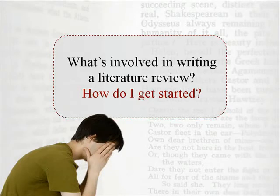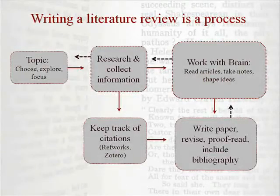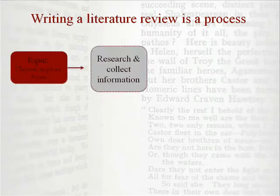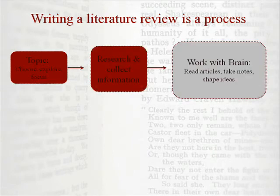At this point, you may be asking yourself what's involved in writing a literature review and how do I get started? Writing a literature review is a process with several key steps. Your first step involves choosing, exploring, and focusing your topic. At this stage, you might discover that you need to tweak your topic or the scope of your research as you learn more about the topic in the literature. Then you'll need to do some research using article databases, the library catalog, Google Scholar, and other sources to find scholarly information. You'll want to evaluate what you find and select articles, books, and other publications that will be the most useful.